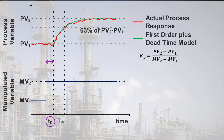The dead time, T sub D, is the time after the manipulated variable moves and before the process variable starts to move towards its steady-state value. Dead time can happen because we don't measure a change until after it's had time to move down a pipe or through a vessel.